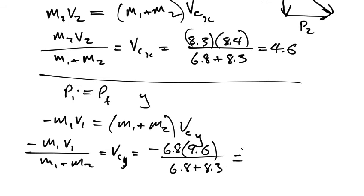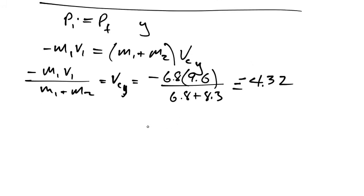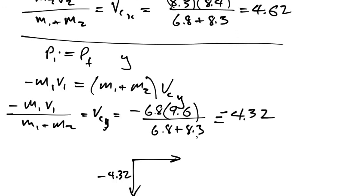And that's going to give me, by the way, this was 4.62. And so 6.8 enter, 9.6 times 6.8 enter, 8.3 plus divided by, and this one I'm getting 4.3. Now, now that I know the x and the y, by the way, that's negative. So now what I can say is that the final velocity is in the y direction, it's negative 4.32. And the x direction, it's a positive 4.6.